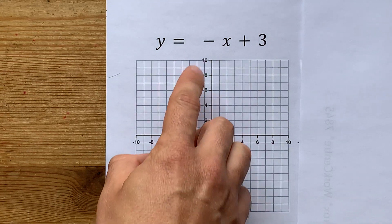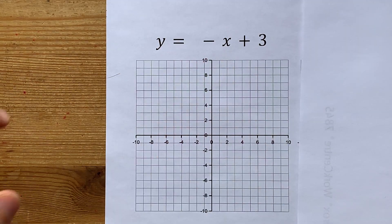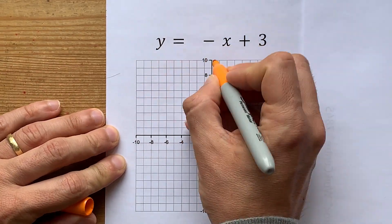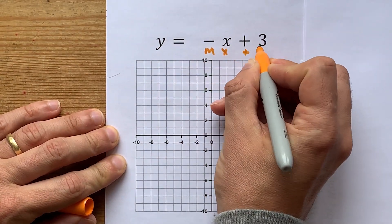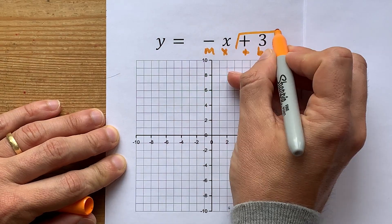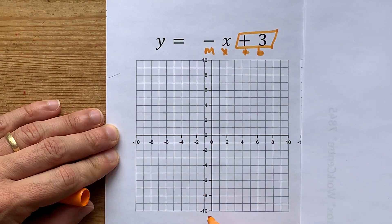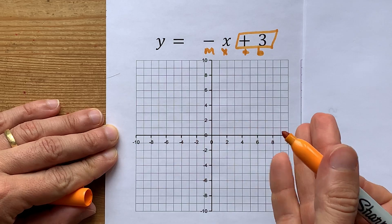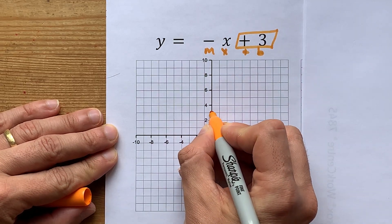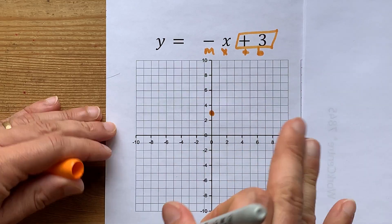You're being asked to graph y equals negative x plus 3. This is already in y equals mx plus b form, which means the positive 3 is the y-intercept. On the y-axis — the up-down axis — find 3 and put a dot there. That's the first point on your line.